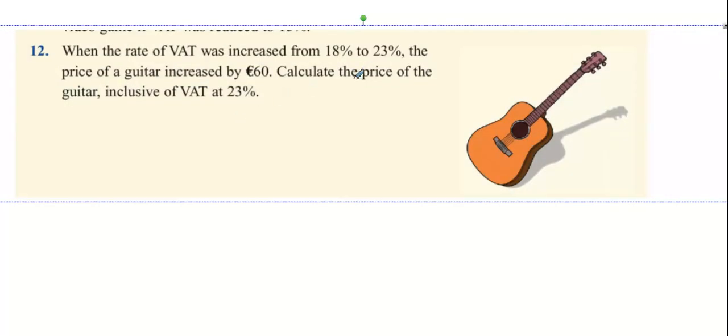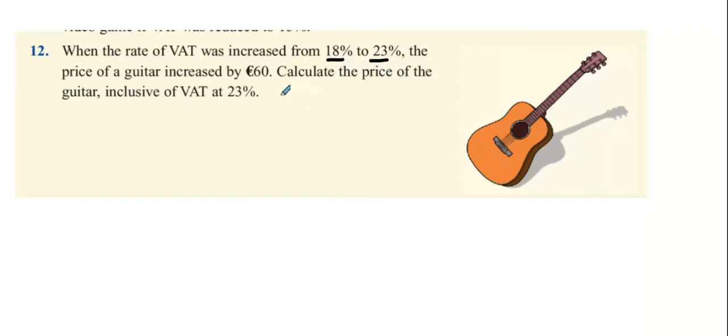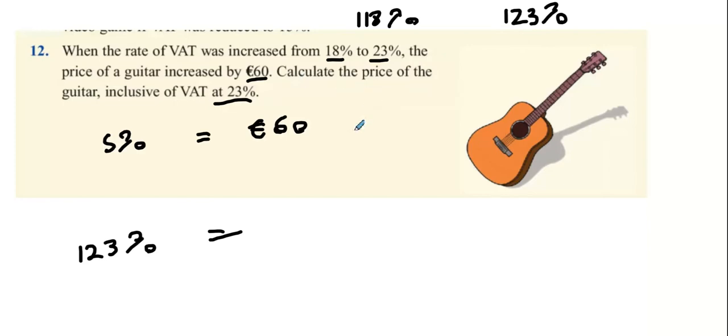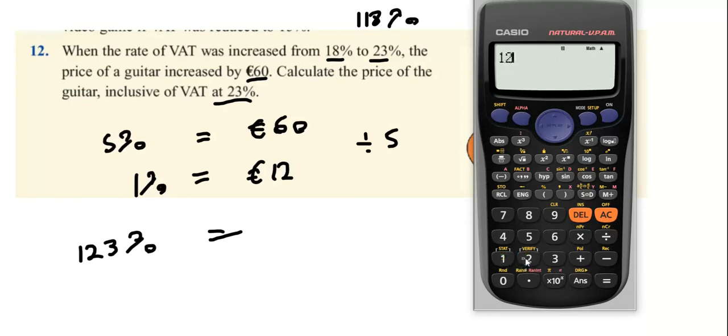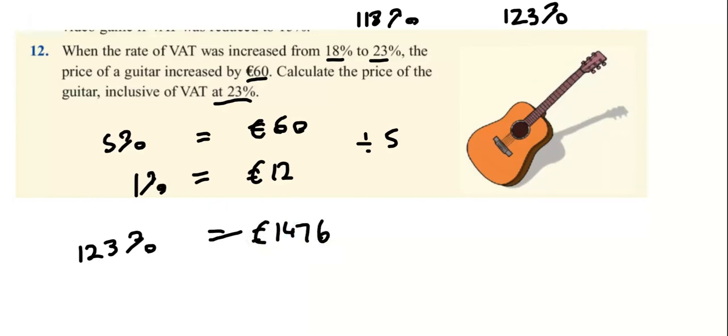Question 12: When the rate of VAT is increased from 18% to 23%, the price of the guitar increased by €60. Calculate the price of the guitar inclusive of VAT. A 5% increase results in €60. We want to find 123%. Find out what 1% is by dividing by 5 to get €12, and multiply 12 by 123 to get €1,476 for the guitar.